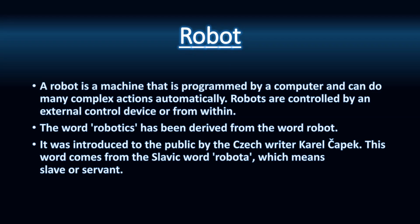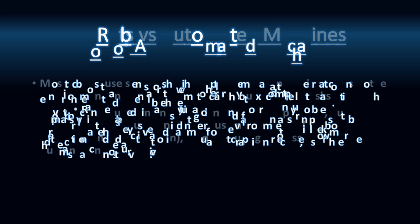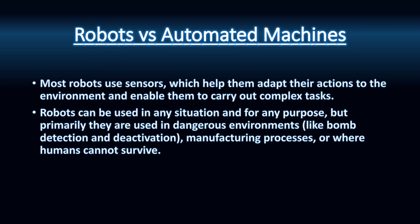A robot is a machine that is programmed by a computer and can do many complex actions automatically. Robots are different from automated machines. Most robots use sensors which help them adapt their actions to the environment.